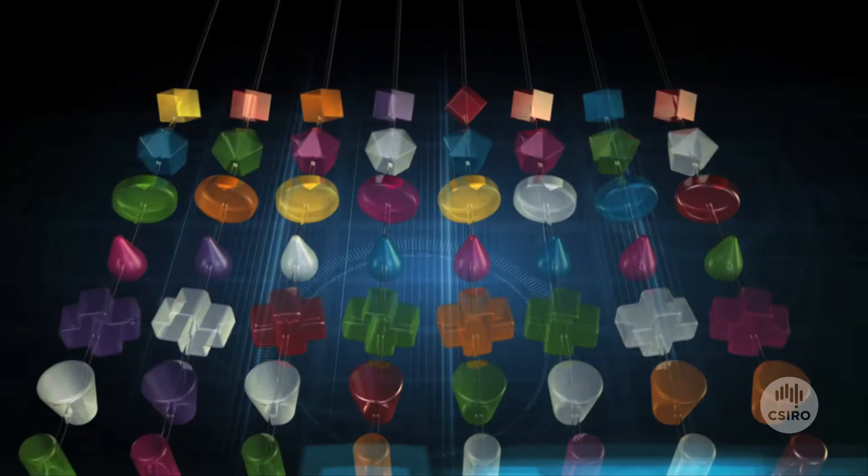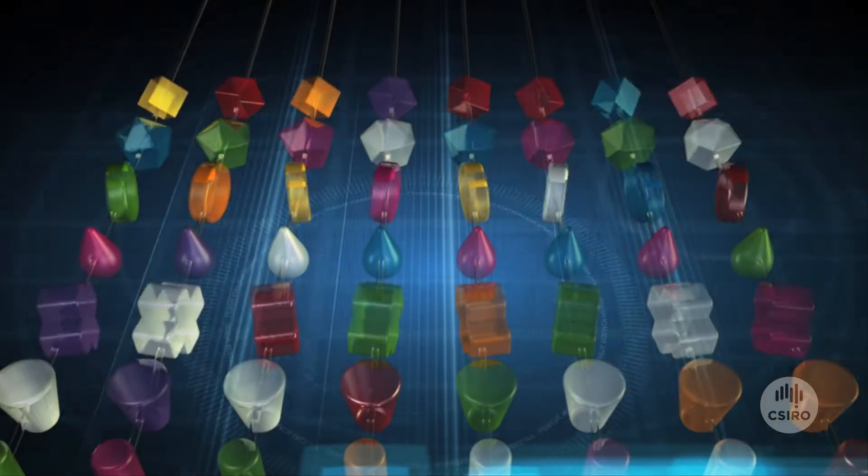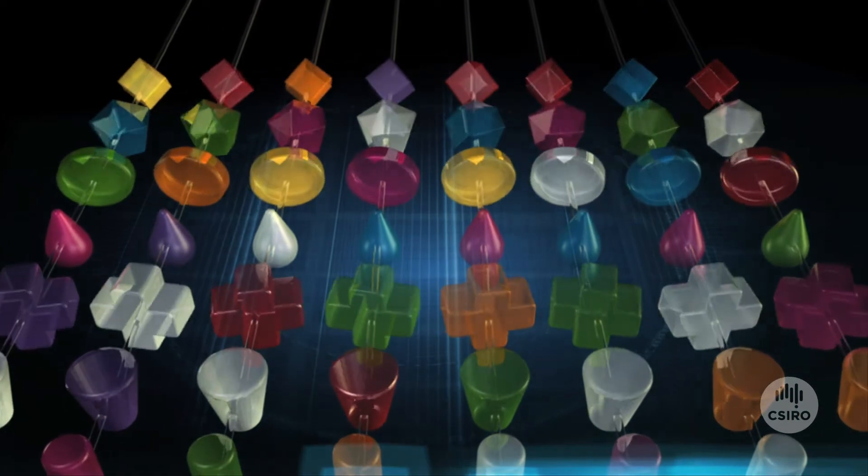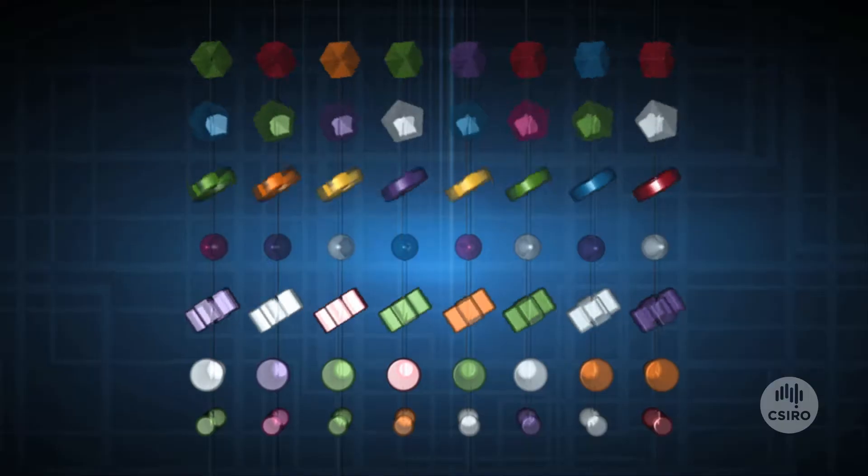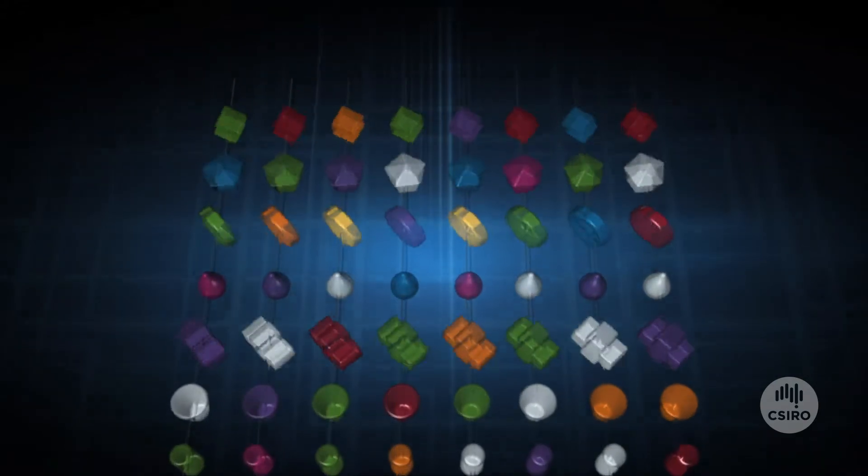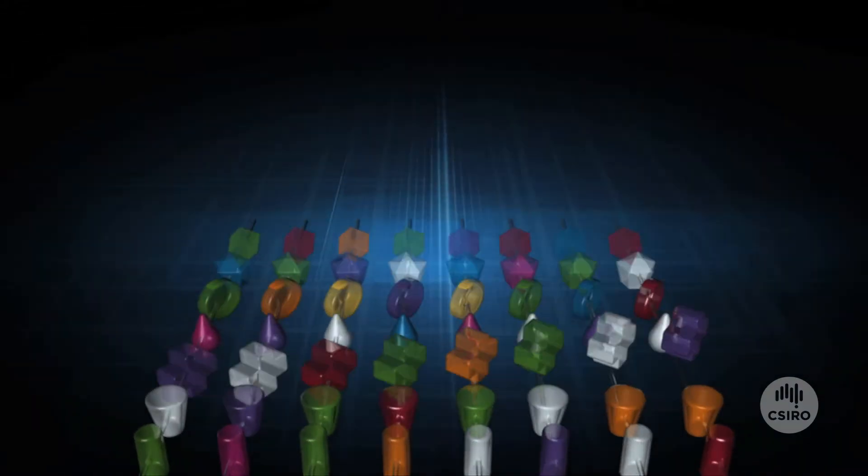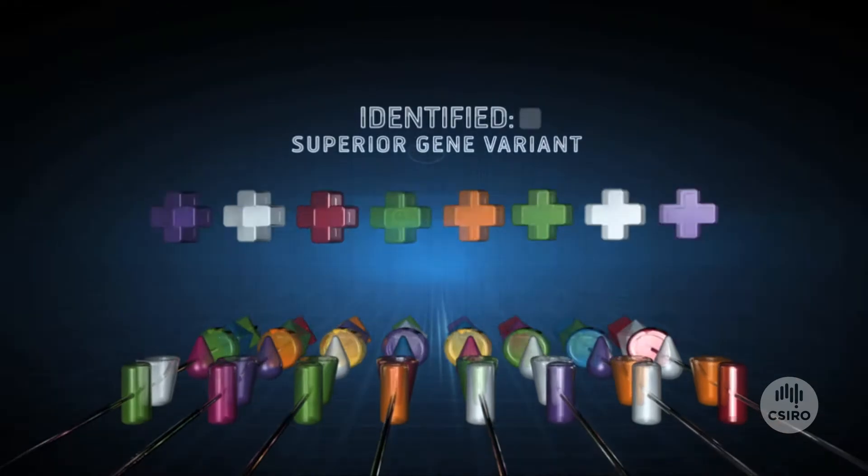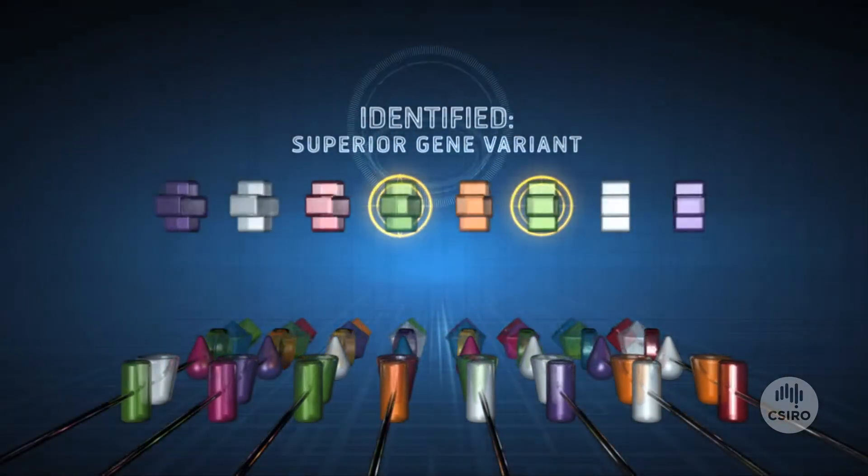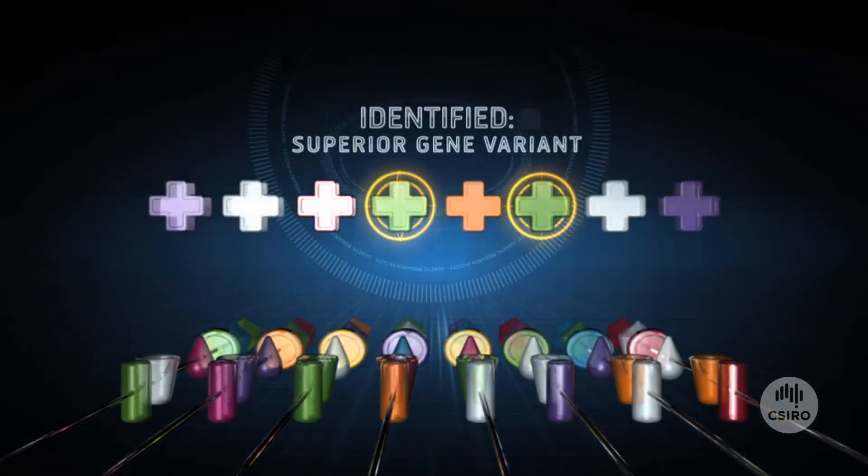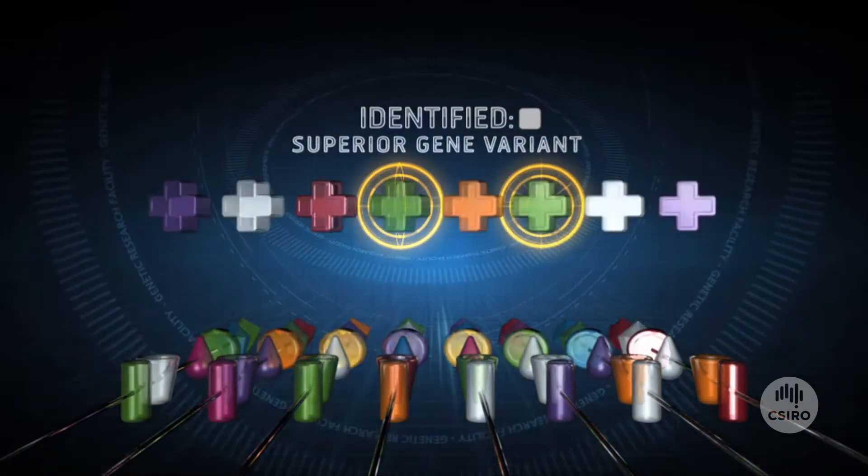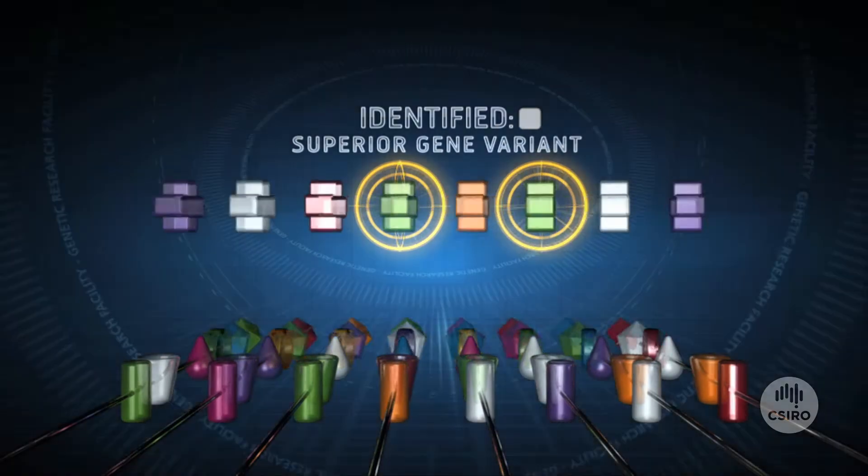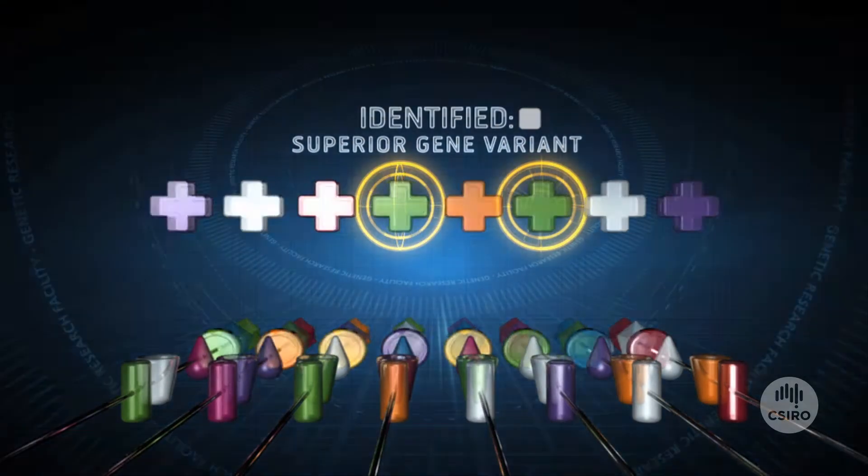The second major advantage is that MAGIC incorporates a large proportion of the genetic diversity within elite varieties of wheat from around the world. And whilst we want to know which gene controls a particular trait, this isn't all we need to know. There is enormous diversity within genes that control important traits, and we need to identify the best option. Using MAGIC, we can identify which of these genes' variants is the best.